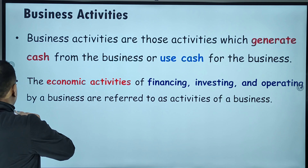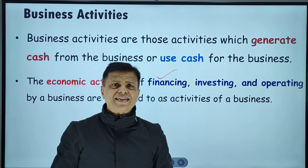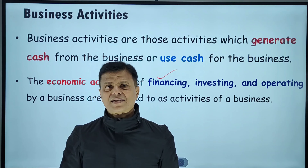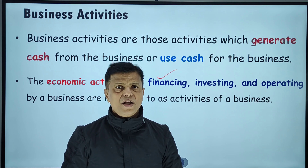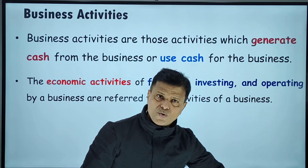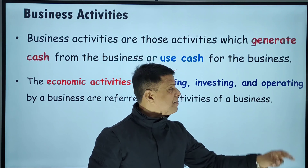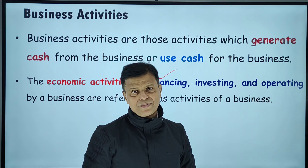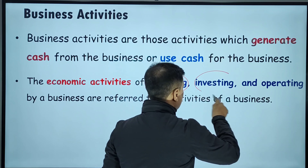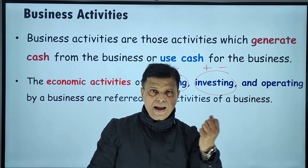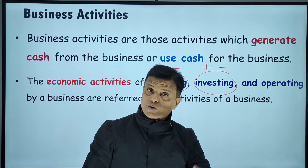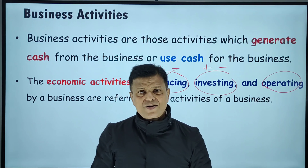There are three types of business activity. Financing activity: we raise capital by selling shares or by borrowing a loan from the bank. So raising money for our business is called financing activity. Investing activity: buying assets — fixed assets or current assets — is investing activity. Buying machinery is a use of cash; selling old machinery is a source of cash.